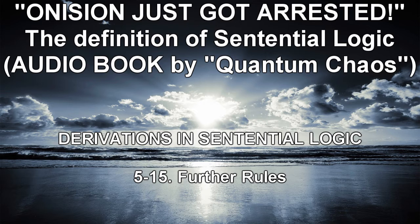Tilde-ampersand out: not-(A and B) gives A, B. Tilde-arrow out: not-(A arrow C) gives A and C. Tilde-double-arrow out: not-(A double-arrow B) gives A, B. The reader is urged to verify that these are all valid argument forms of sentential logic.